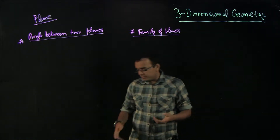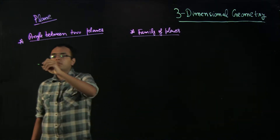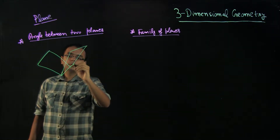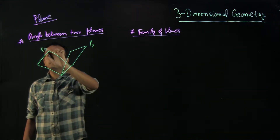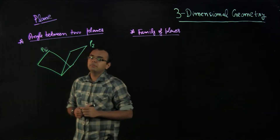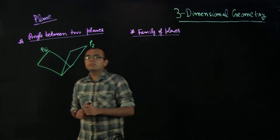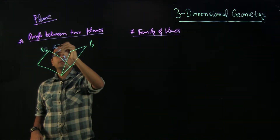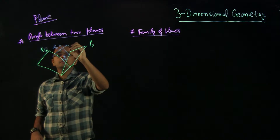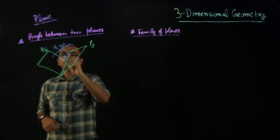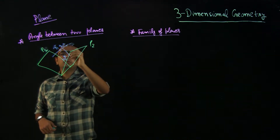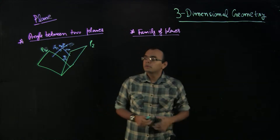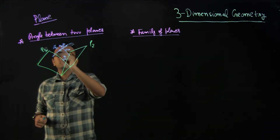For angle between two planes, it is probably very easy for you to imagine. If there are two planes, let us say P1 and P2, there are two normals here. The angle between them is let us say theta. You can imagine that the angle between their normals would also be theta — this would be N1 and this would be N2. The angle between the normals will be the angle between the planes.